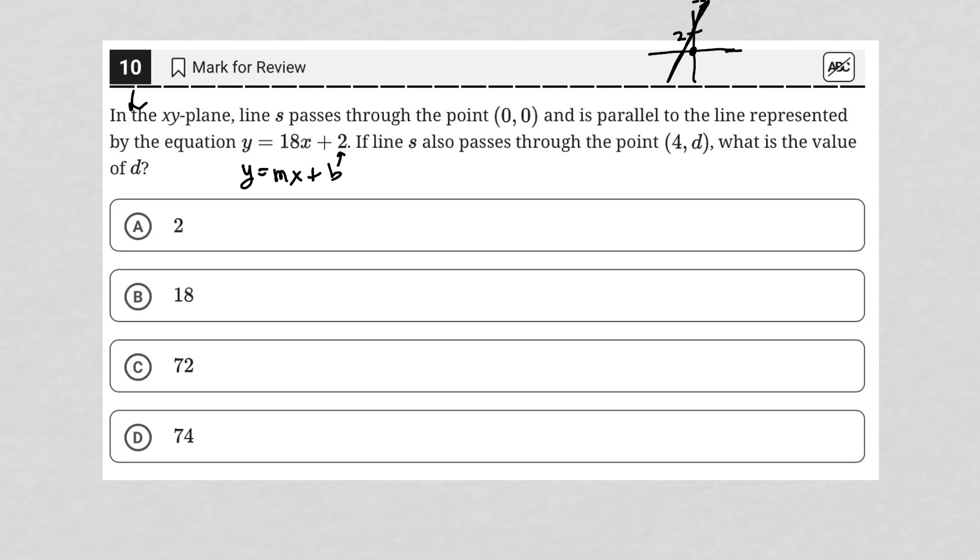Which means my line s must look like that. The other hint here is that whenever you see parallel and the question provides information that includes a slope, it means that the slope of this line must also be the same. So what do I know about line s?